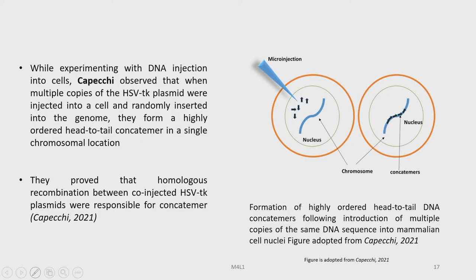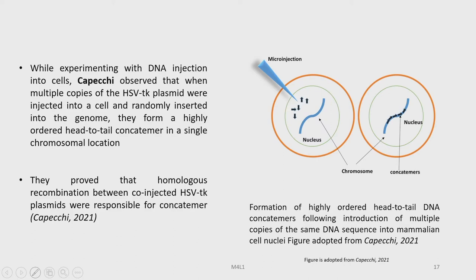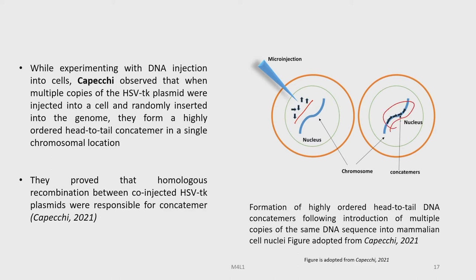While experimenting with DNA injection into cells, Capecchi observed that when multiple copies of the HSV-TK plasmid were injected into a cell and randomly inserted into the genome, they formed a highly ordered head-to-tail concatamer at a single chromosomal location. The microinjection introduced these plasmids directly inside the nucleus, where you can see a chromosome and all the HSV-TK plasmids aligning in a very systematic way and connecting to one another to form a concatamer.